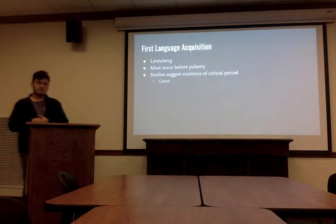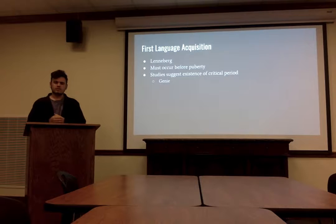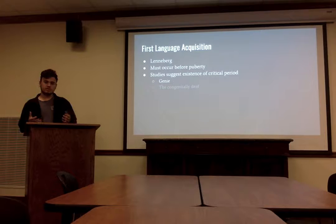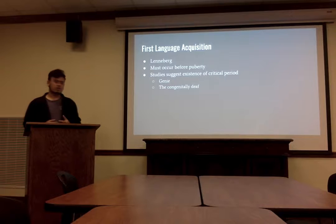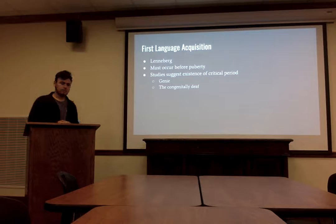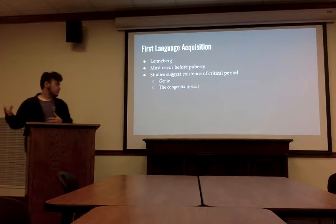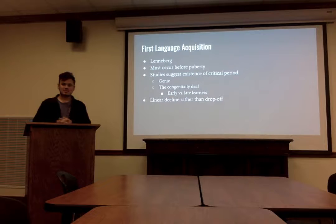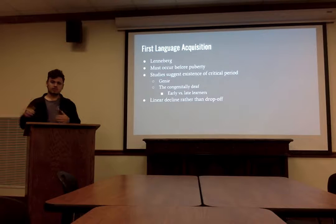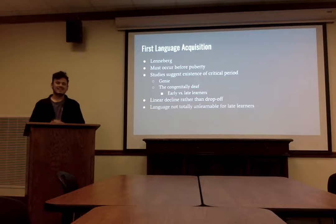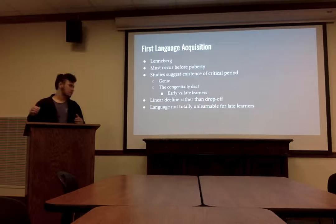Some studies suggest the existence of the critical period. One is Genie, the girl we talked about in class — she was left in solitude by her parents until the age of 13 with very little social interaction, and when they tried to teach her language, she didn't progress very far. Another example comes from studies on the congenitally deaf, which showed that people who learned sign language younger tend to have a much better understanding of language than those who learned it after puberty. These studies show a linear decline in the ability to learn language up until puberty — it's not just a drop-off. Language is not totally unlearnable for late learners, but there seems to be a point where they just can't progress further, which is what the critical period is about.